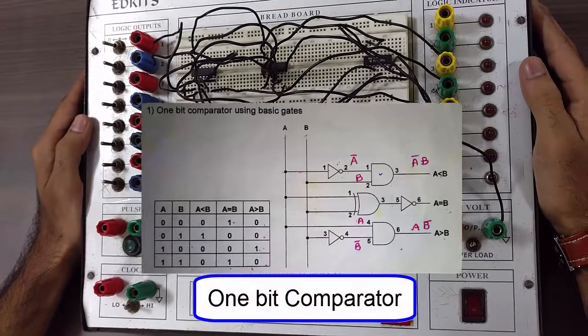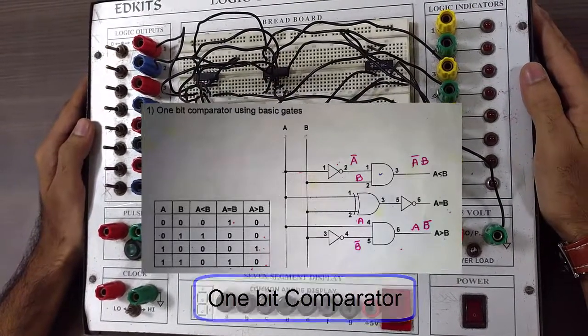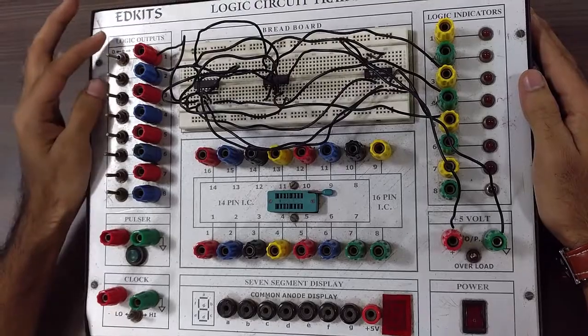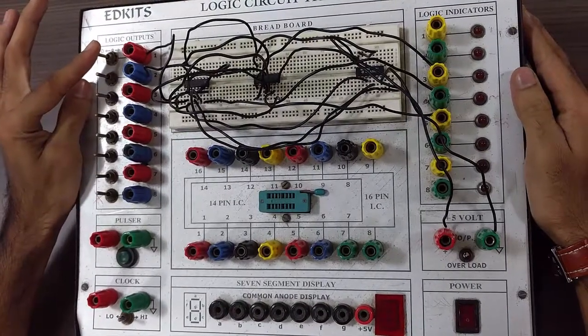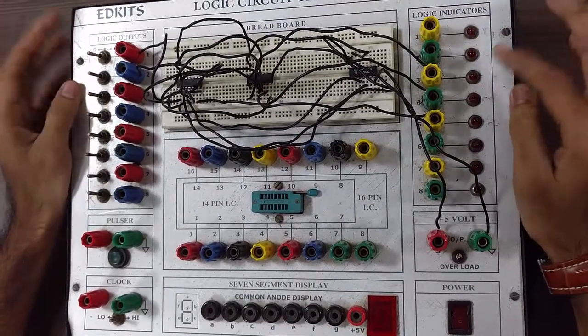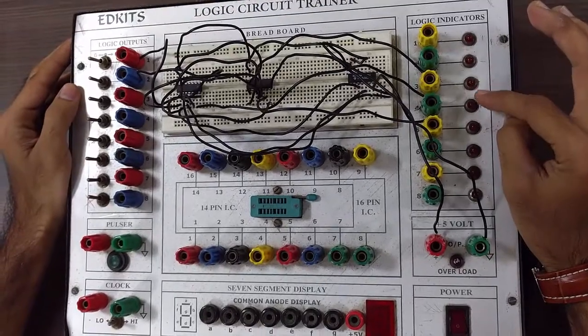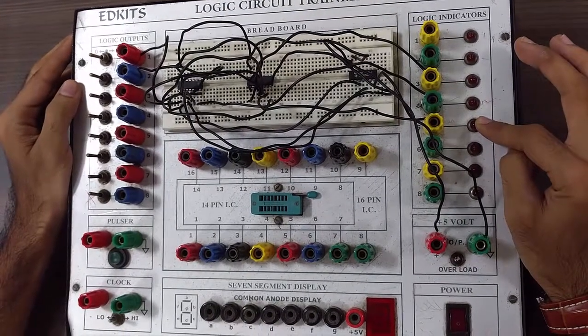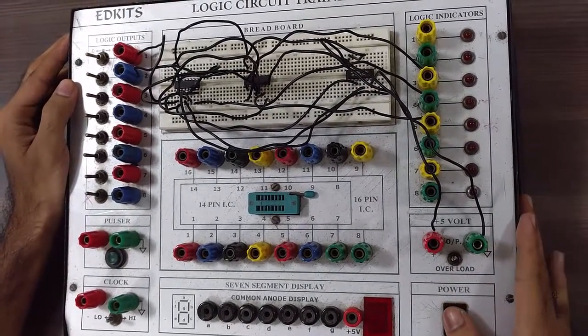So now we are done with the connections as we have discussed earlier. So now let's verify the truth table. We have used this input as input A, this as input B, this output is for A less than B, this is for A equal to B, and this is for A greater than B. So now let's just power it on.